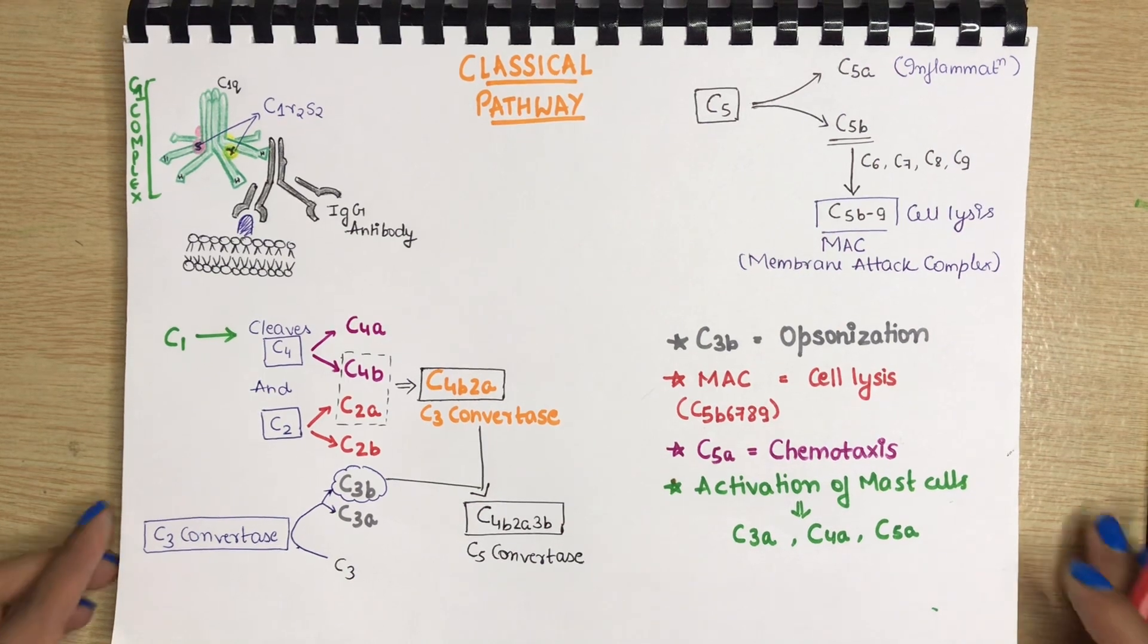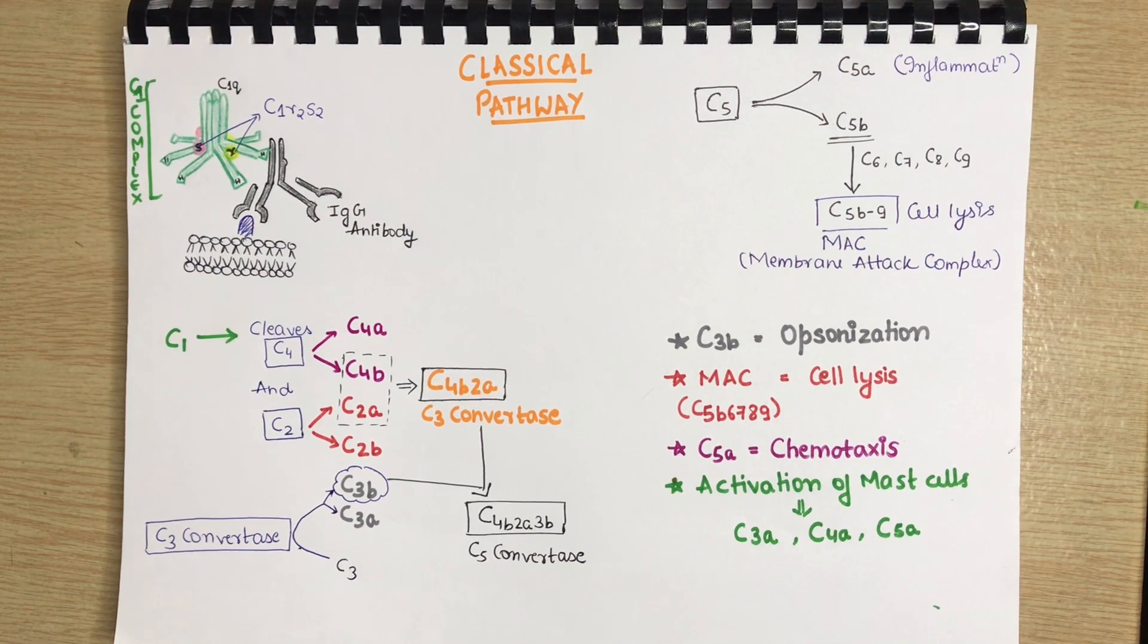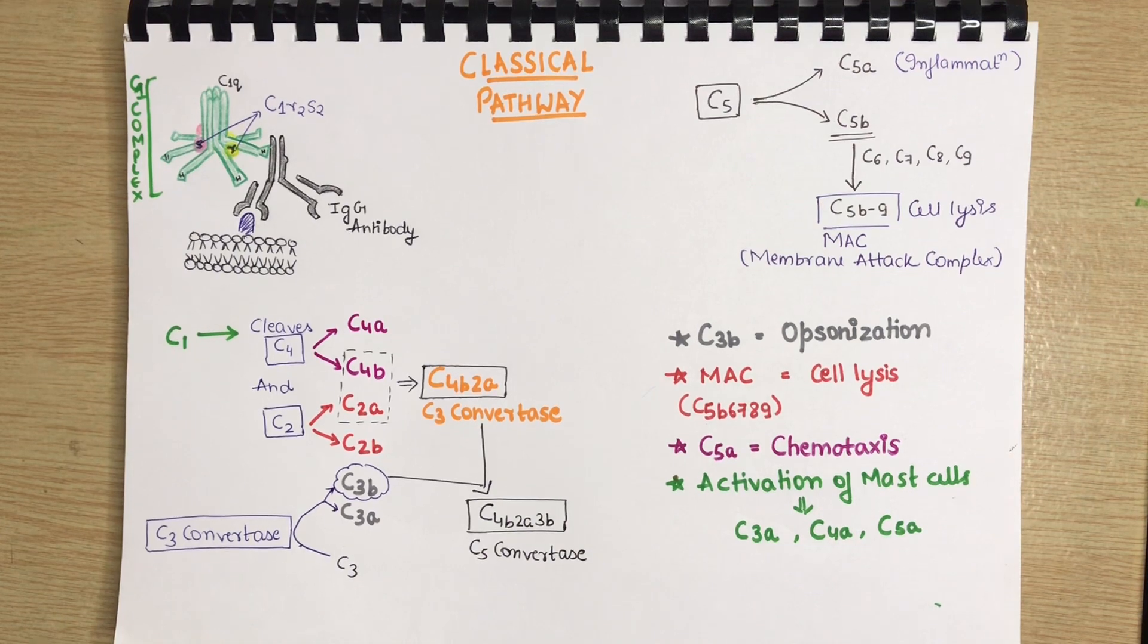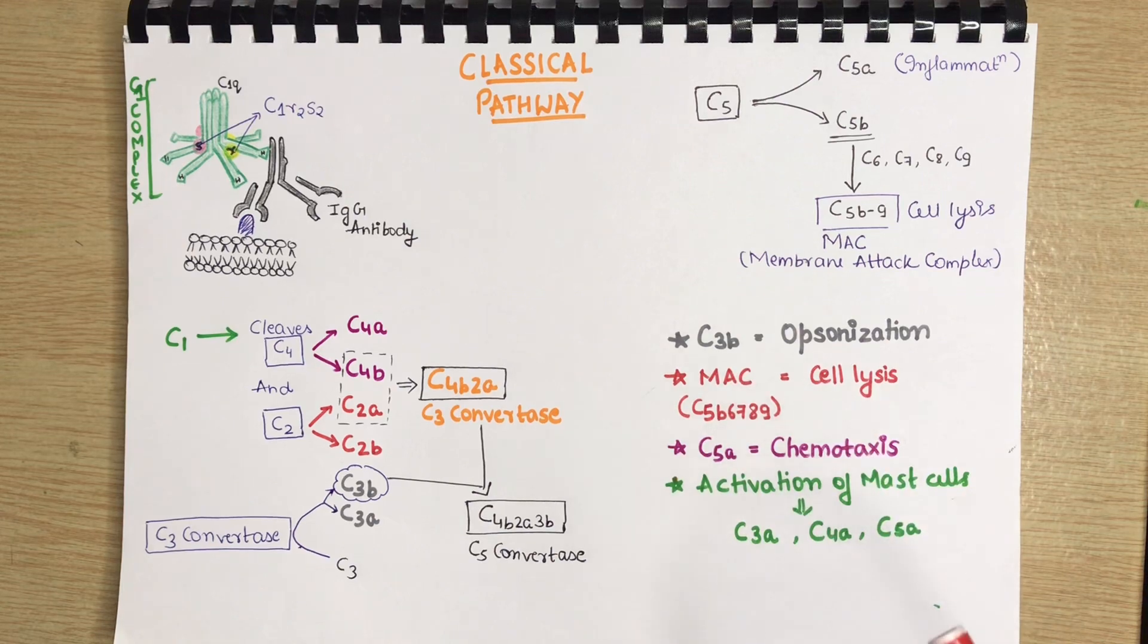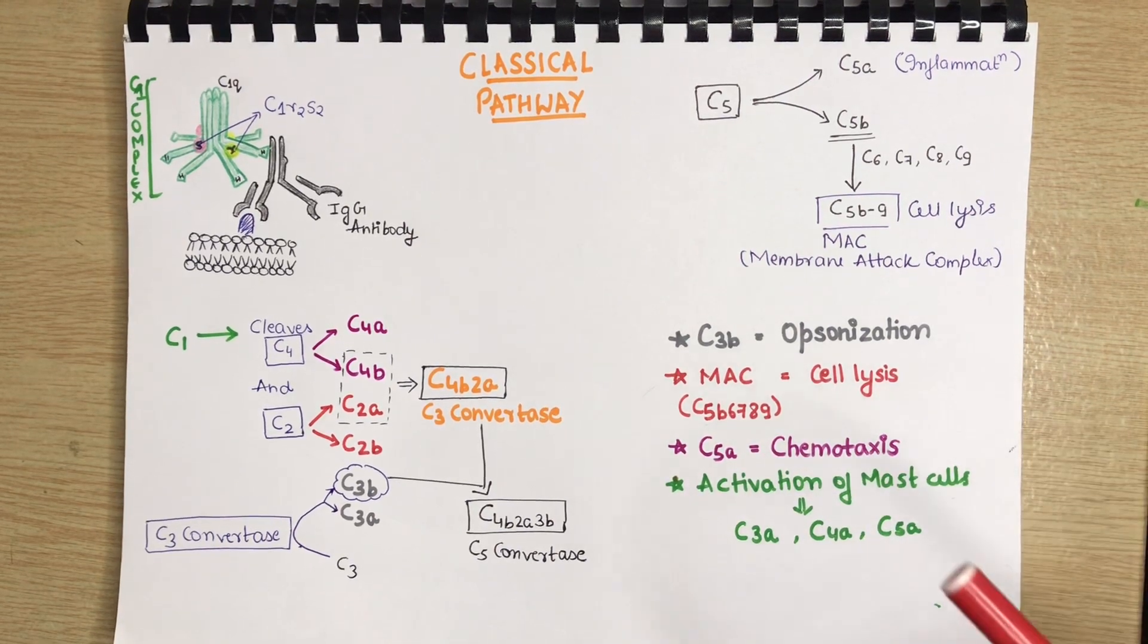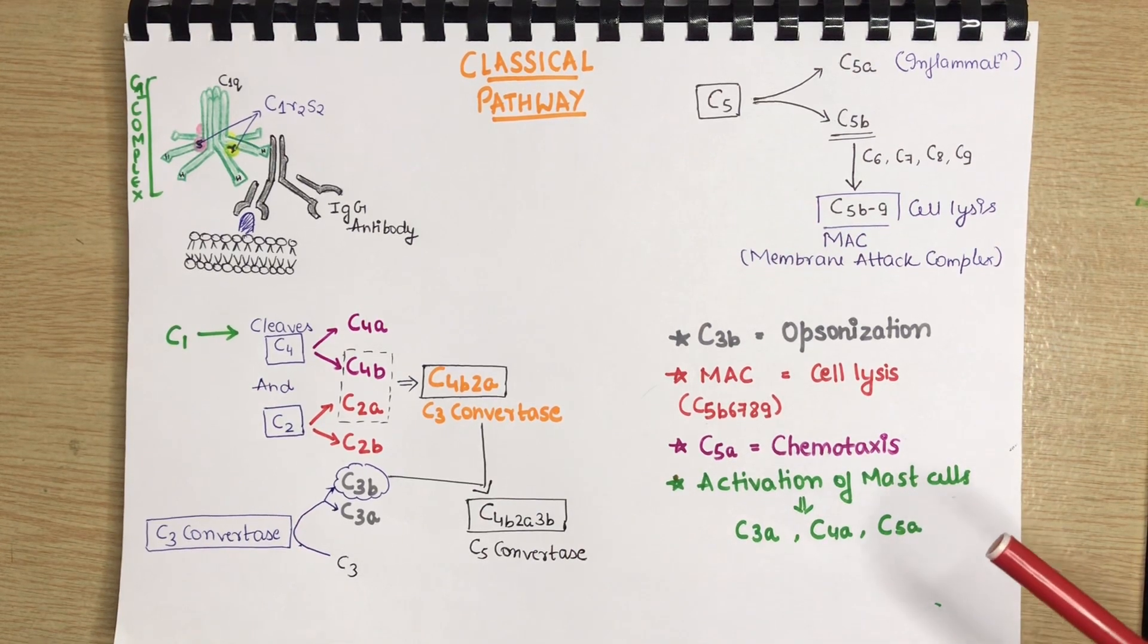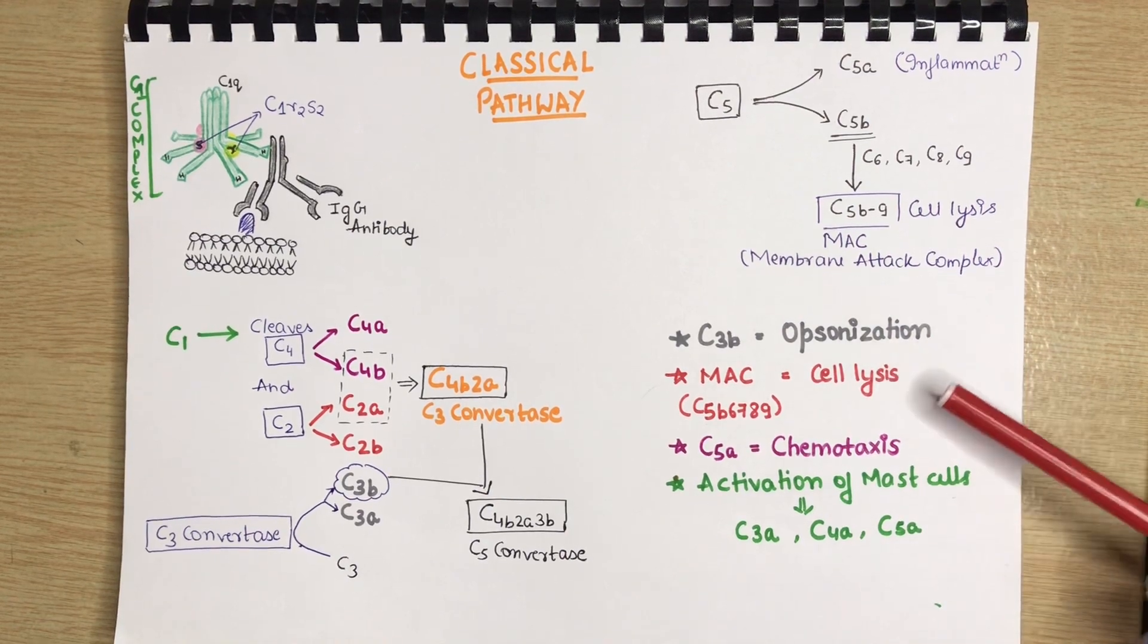Now, let's see what the other complement proteins are doing. C3B, it is causing the opsonization. What basically is opsonization? It is a mechanism by which the targeting of particle for destruction by phagocytic cell becomes enhanced. What C3B actually does, it goes and it attaches itself to the pathogens and it makes them more recognizable. So, the phagocytic cells can go and kill them easily. Basically, it is enhancing the process of phagocytosis.